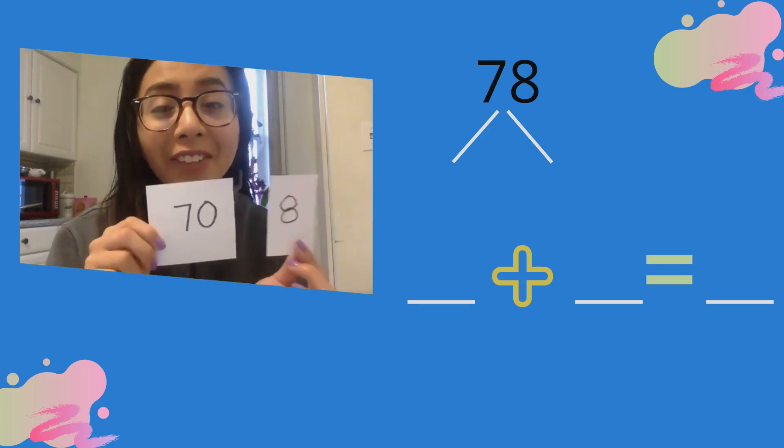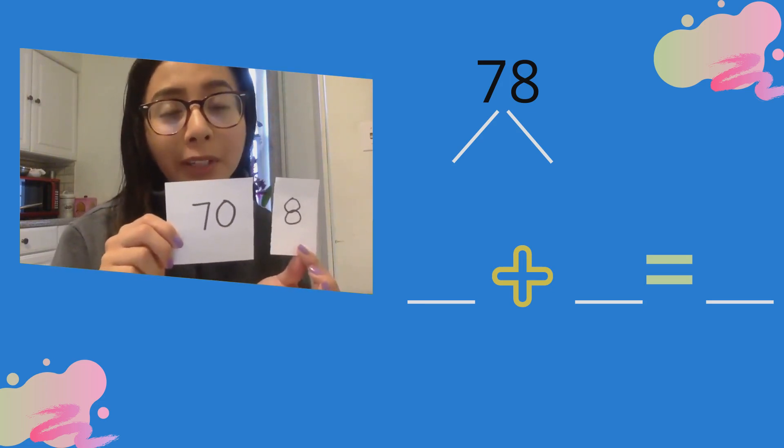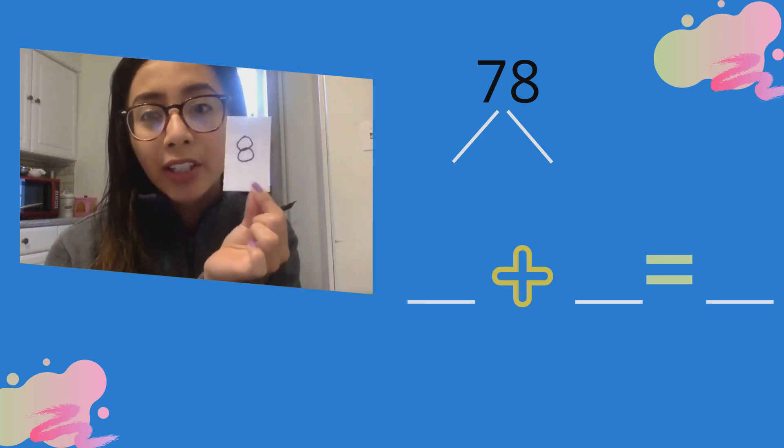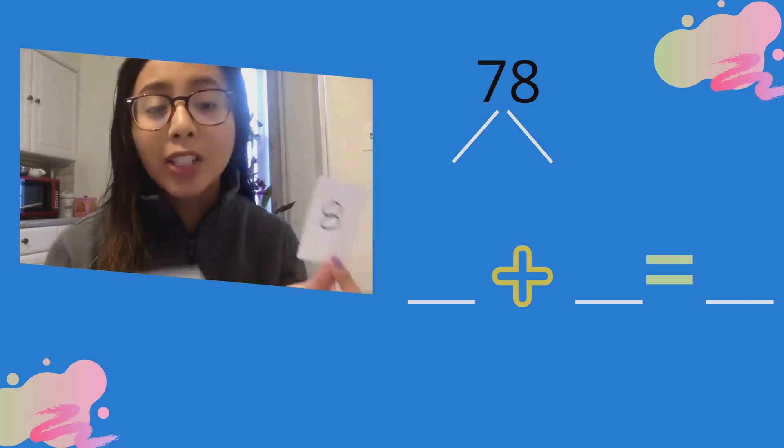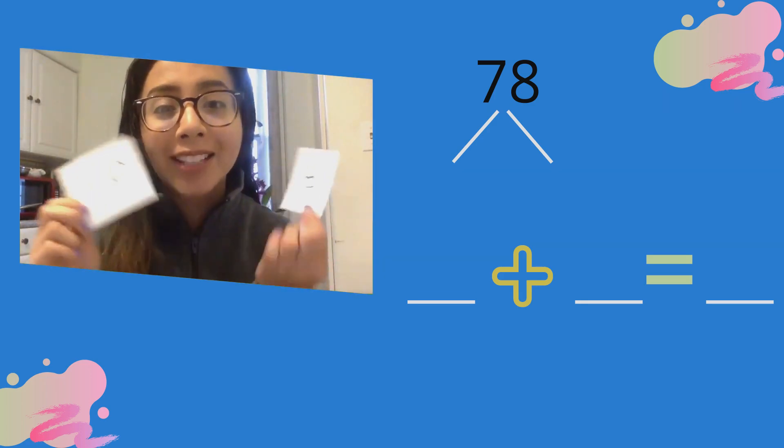I have 70 and 8. How many tens or groups of ten are in the number 70? Seven. Seven tens. And how many ones are here? There's eight ones. So seven tens and eight ones is the same as 78.